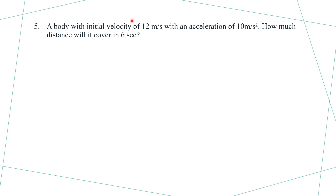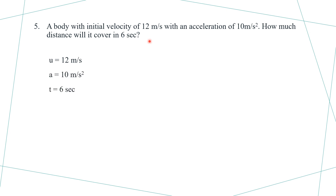Example number 5: a body with an initial velocity of 12 meters per second and an acceleration of 10 meters per second squared — how much distance will it cover in 6 seconds? So u equals 12 meters per second, a equals 10 meters per second squared, and t equals 6 seconds.